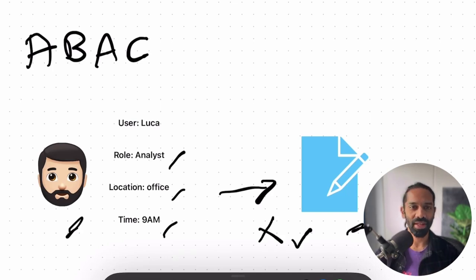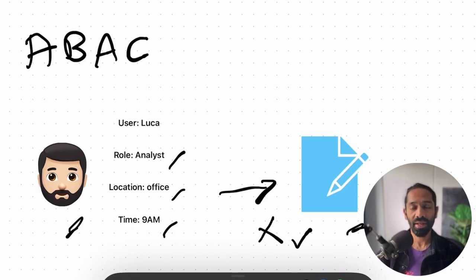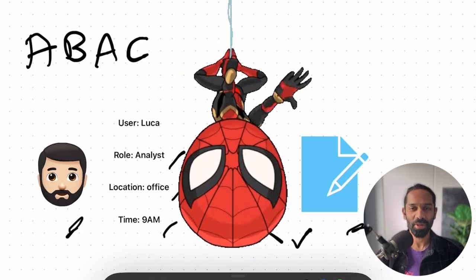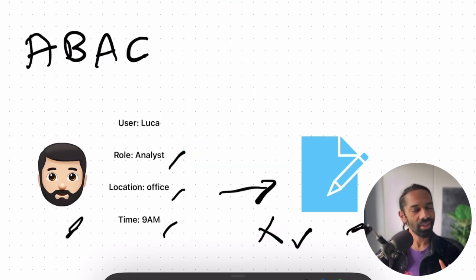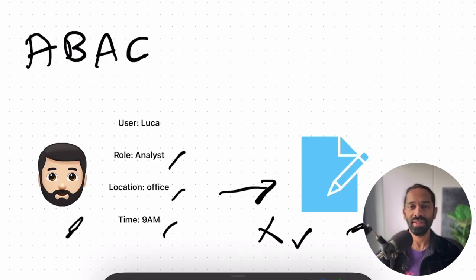ABAC is super flexible because you can create very specific policies that adapt to your needs. This is great for complex environments where the old one-size-fits-all approach, like a role-based system, doesn't really cut it. Having said that, with great power comes great responsibility — ABAC policies can get complicated really fast, especially at scale. Managing all these different attributes might require very advanced tools and expertise and can also be resource intensive.